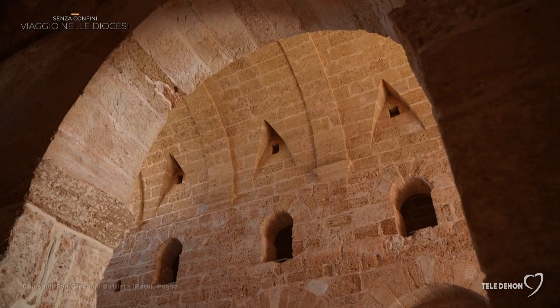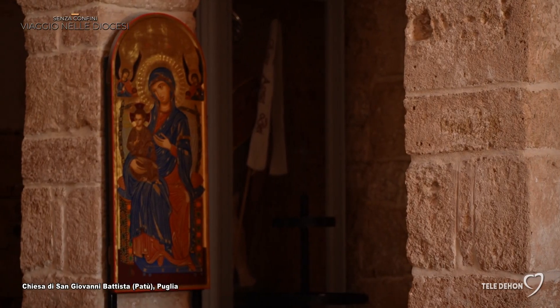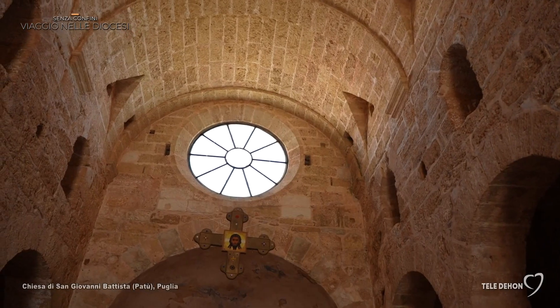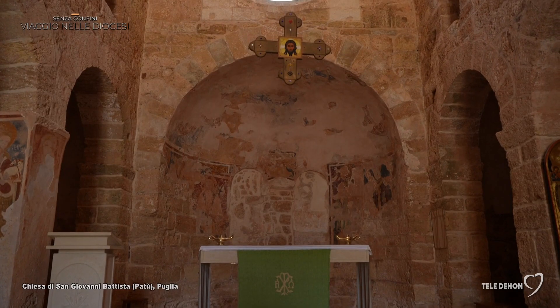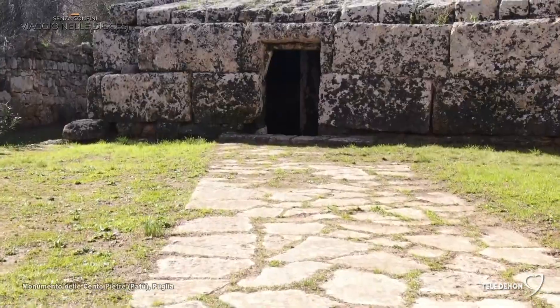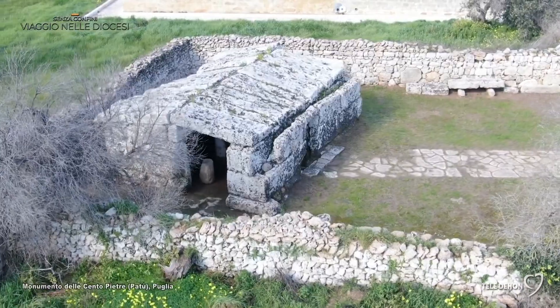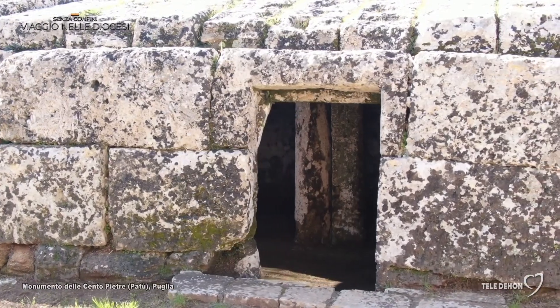Among the oldest churches in our territory is one located in the Comprensorio Alessanese, dedicated to San Giovanni — a church whose ancient origins date to the 6th century. In front of its facade, we have another characteristic and unique monument of the Pugliese tradition: the Centopietre, probably a funerary cenotaph made with blocks of Calcarenite in the Middle Ages, built from the spoliation of the Messapic edifices of ancient Vereto.